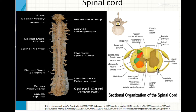The gray matter divides the white matter into four regions: two lateral funiculi, one dorsal funiculus, and one ventral funiculus. The central part of the gray matter contains a small canal known as the central canal, through which cerebrospinal fluid flows. This central canal is lined by special cells known as ependymal cells, which secrete the cerebrospinal fluid.